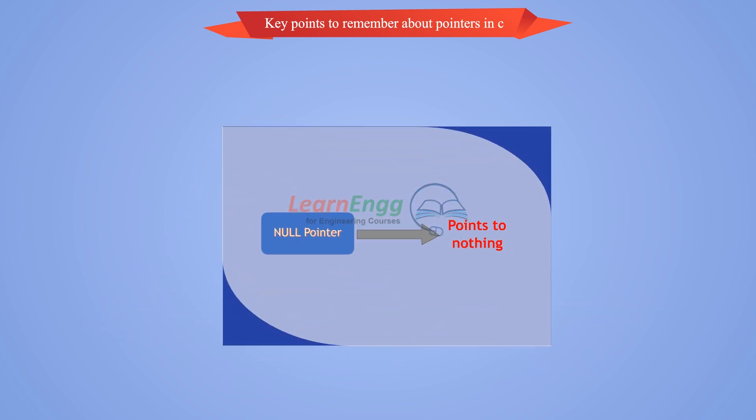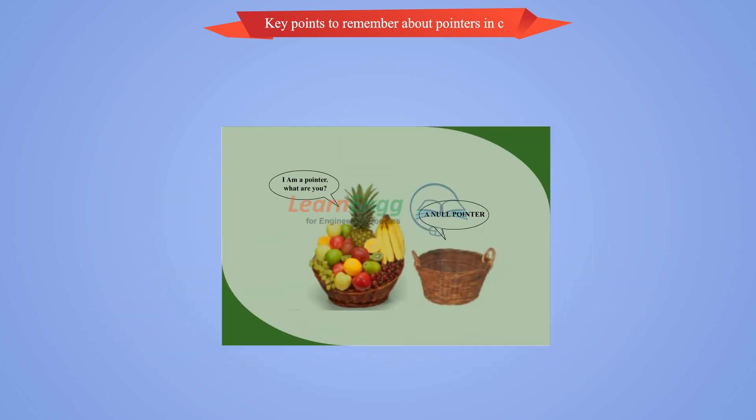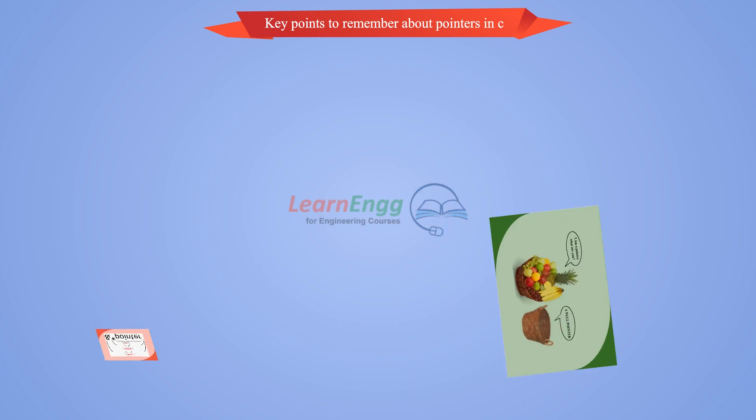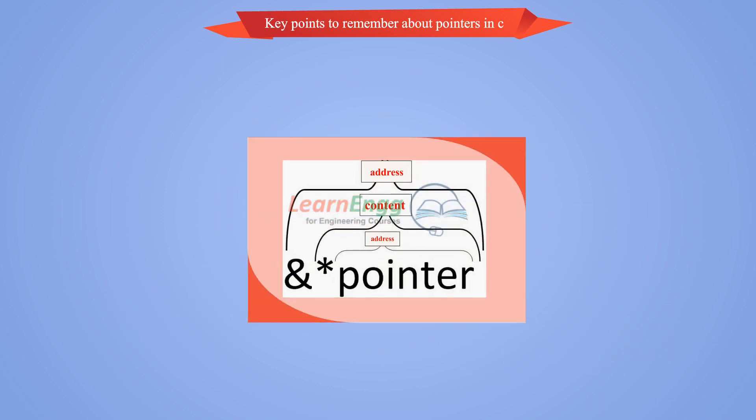Always C pointer is initialized to null, i.e., integer pointer A equal to null. The value of null pointer is 0.